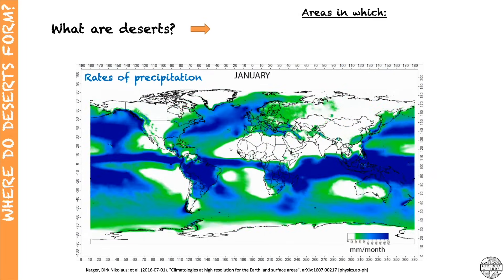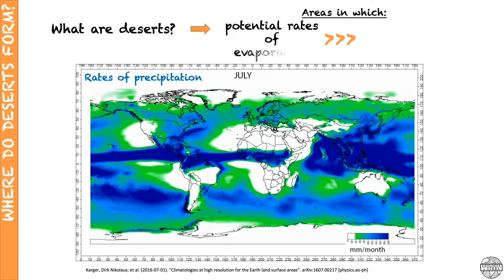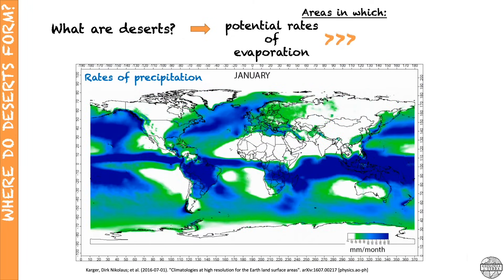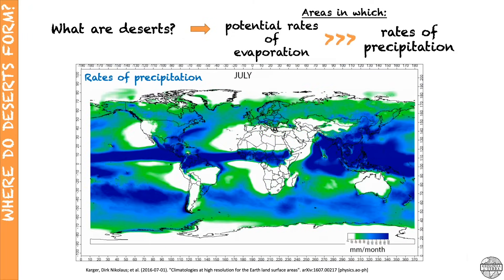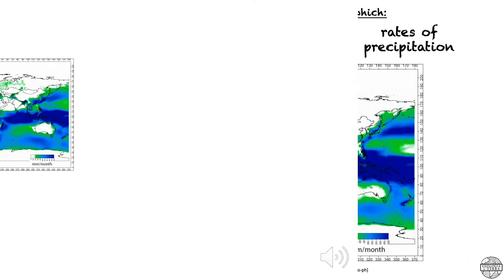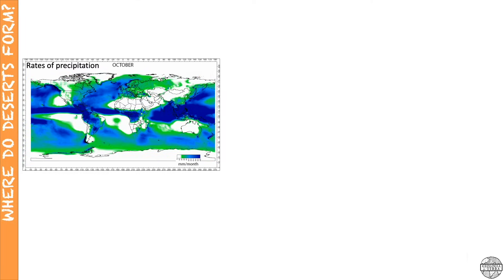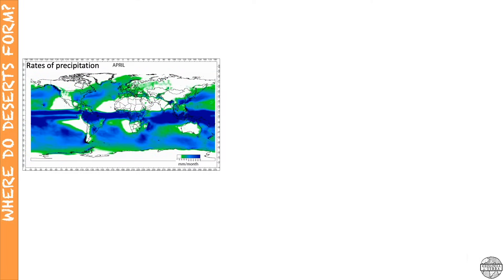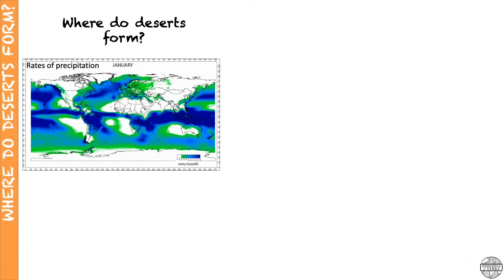The rates of precipitation are used to define desertic regions. Deserts are locations where the potential rates of evaporation are much greater than the rates of precipitation. And where do deserts tend to form? That is, where are the major deserts located today on our planet?